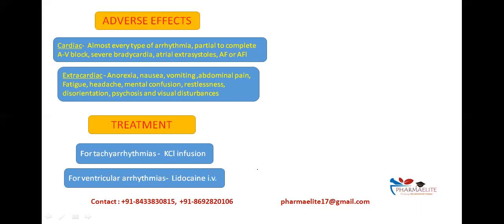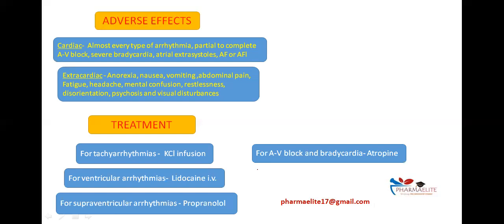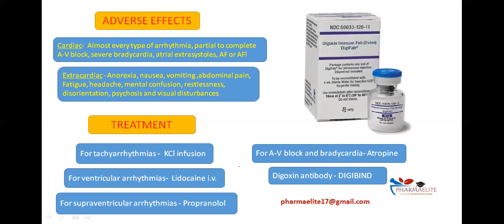For ventricular arrhythmias, the drug of choice is lidocaine, repeated as required. For supraventricular arrhythmias, propranolol IV or orally depending upon urgency is the drug of choice. For AV block and bradycardia, atropine is given — AV block being interruption of electrical conduction from atrium to ventricle due to conduction abnormalities. Lastly, there is a digoxin antibody called Digibind (digoxin immune Fab ovine, also known as DigiFab), made from Fab fragments, which is non-immunogenic, given by IV infusion, and helpful in treating Digitalis toxicity.